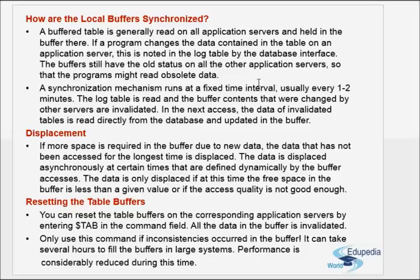Displacement occurs when the free space is less — say the empty space in the buffer of an application server reaches around 10%, then the tables which are not accessed for a long time are removed. There is also something known as buffer quality. Buffer quality means the number of calls served from the buffer divided by the total number of database calls made. For example, if 10 accesses have to be made and 3 hits were there in the buffer, then 3 divided by 10 is the buffer quality. If the quality is also not good enough, then the data is displaced from the buffer.